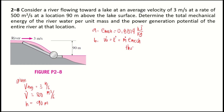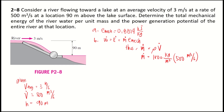For the mass flow rate, that is equivalent to density times the volume flow rate. The density of water is 1,000 kg/m³ times the volume flow rate of 500 m³/s, so the mass flow rate is equal to 500,000 kilogram per second.